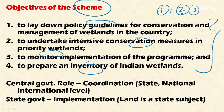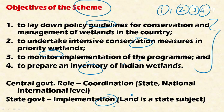The fourth objective is the preparation of inventories of important wetlands in the country. The central government has a coordinatory role between various administrative agencies working at the state, national, and international levels. The real implementation role lies with the state government under the National Wetland Conservation Program, because land is a state subject under the Seventh Schedule of the Constitution of India, so the state has a great stake in conserving wetlands.